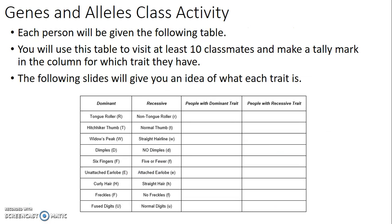There's also an in-class activity where you go around and talk to at least 10 classmates, tallying which traits they have. You'll use a data table showing dominant and recessive traits — put a tally mark in the dominant column or the recessive column depending on what trait they show.